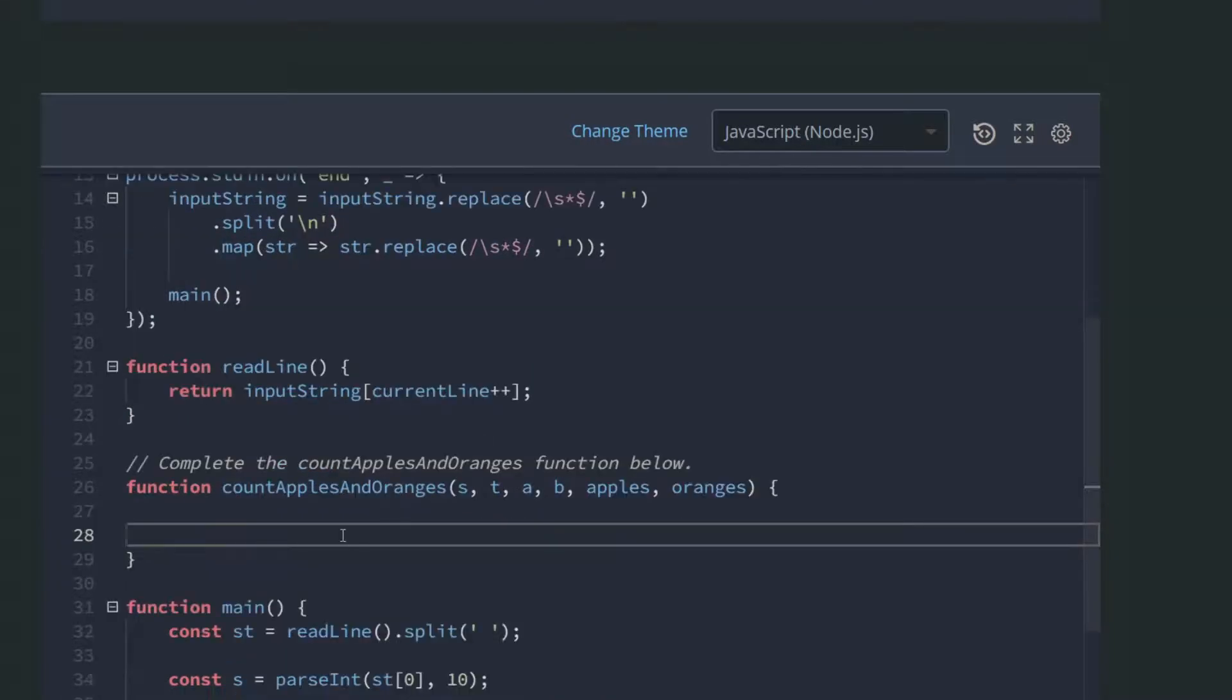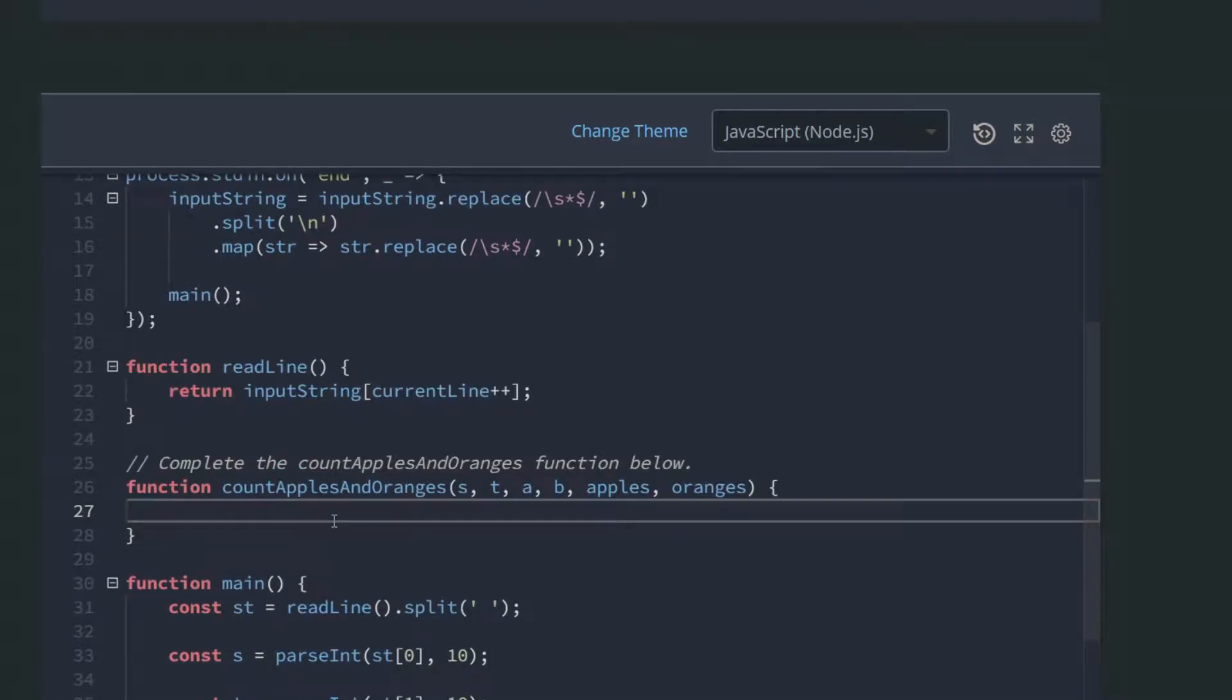I will use JavaScript. They tell you to put your code here and they give you arguments. They just want you to console log the results, each one in a different line. First thing I will create a variable called apples.